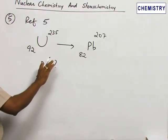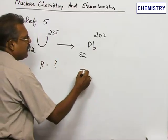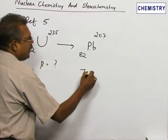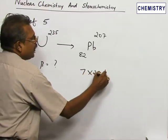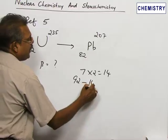We have already found out the number of alpha particles emitted as 7. Therefore, 7 alpha particles means a decrease in atomic number of 7 times 2, which is 14. From 92, if we subtract that 14, we get 78.